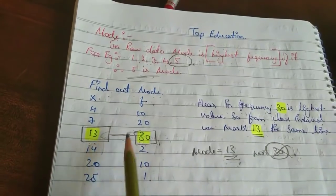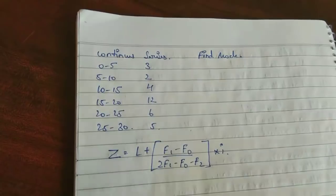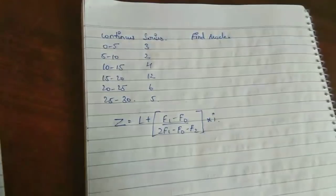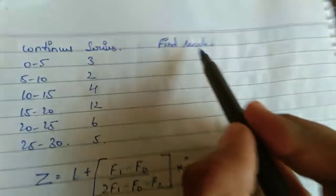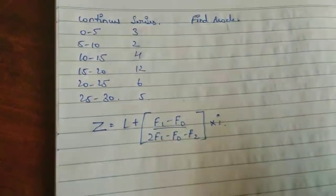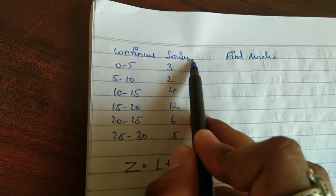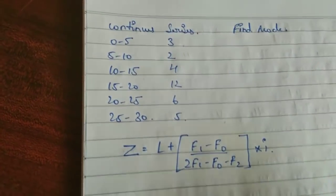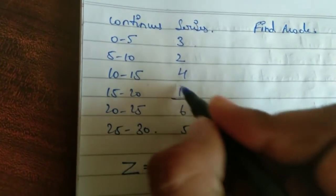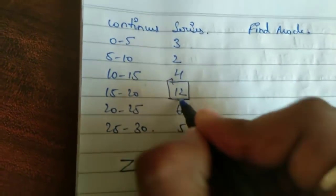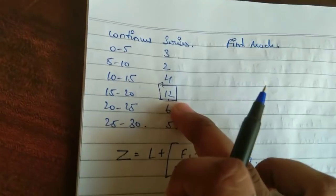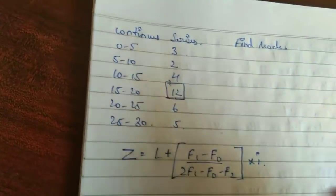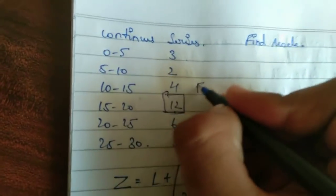This is easy, or else have a full-fledged problem to find mode. So clearly understand the question and move. Here they have gave continuous series, class interval and frequency. What you will do here? See, you have to find the highest value of this frequency and name it as F₀.